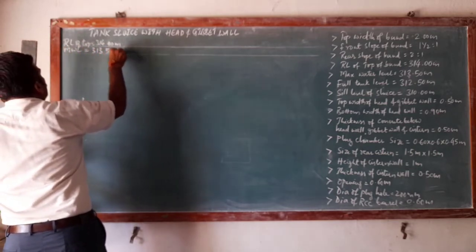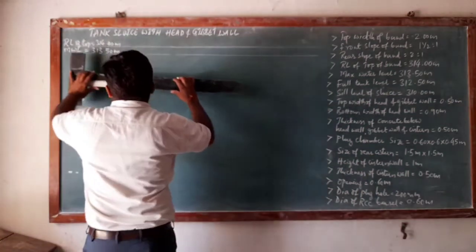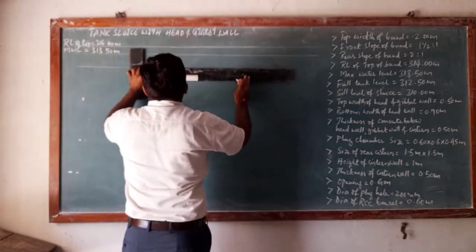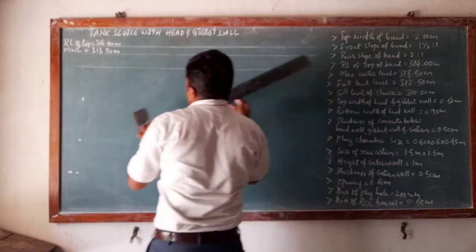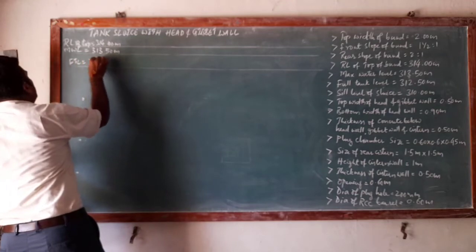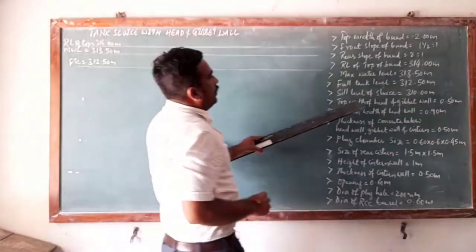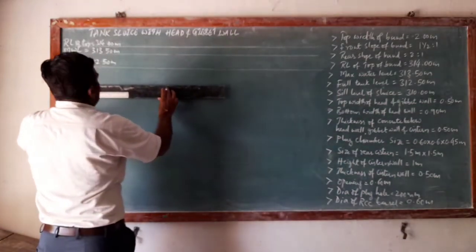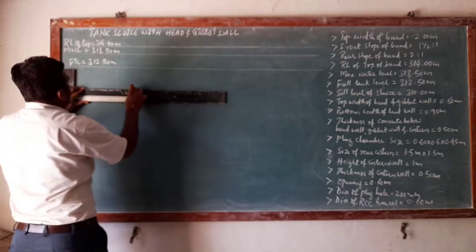This is MWL — maximum water level — 313.5 meters. Next is FTL, that is full tank level, given as 312.5 meters. After that, the sill level of the sluice is mentioned as 310 meters. From here, it will be at a distance of 2.5 meters. On the board, I am going to draw a representative drawing — it may not be possible to draw exactly to scale.